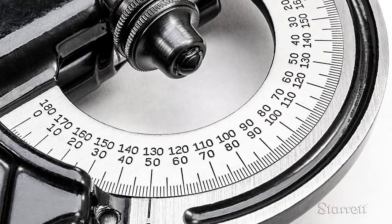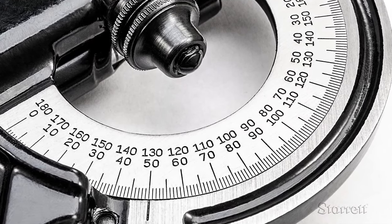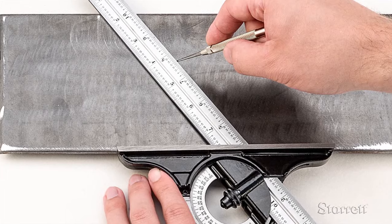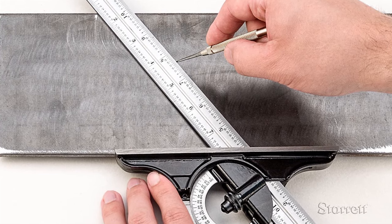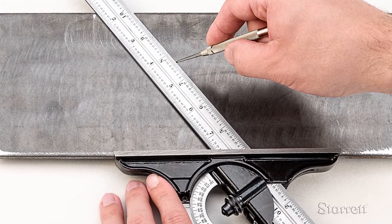In layout work with the protractor head against the side of a part, the rule can be rotated and moved in or out to scribe lines or center punch a spot at a precise distance and angle from origin.